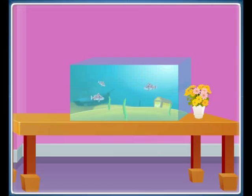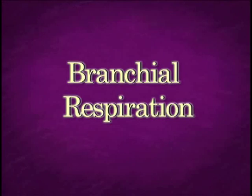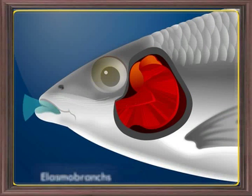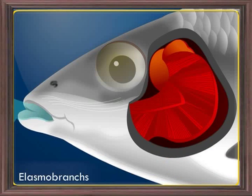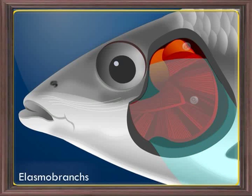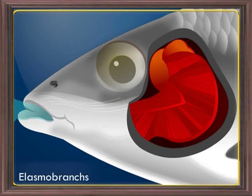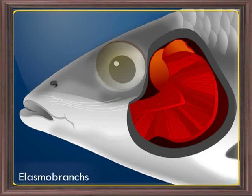We shall now examine branchial respiration through gills and pulmonary respiration through lungs. Fish respire with the help of gills. By opening and closing of the mouth, water flows from the oral cavity and flows constantly over the gills. The water flows out through external gill apertures. The gills are richly supplied with blood vessels. As the water flows over the gills, oxygen is absorbed from the water and carbon dioxide is expelled into the water.